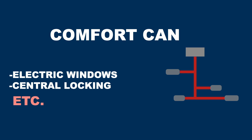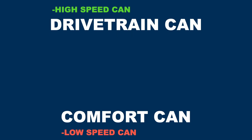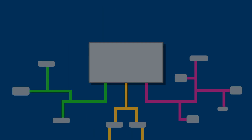Because these CAN buses operate at different speeds, they are not compatible, meaning that they cannot directly communicate with each other. But control units on different CAN buses often need to communicate and share data with each other.